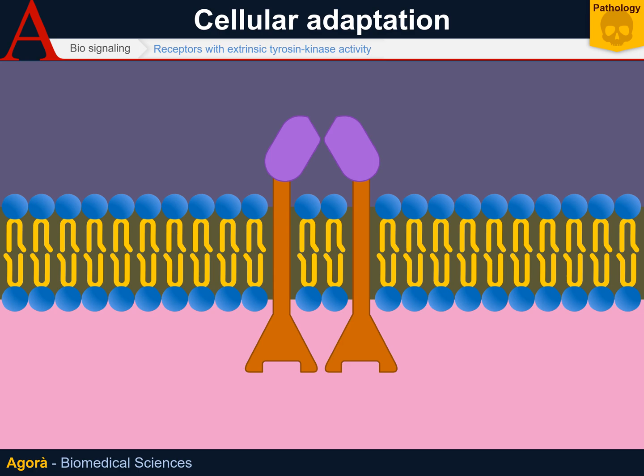Receptors of extrinsic tyrosine kinase activity differ from the previous receptors due to their inability to self-phosphorylate when binding the ligand. Instead, they go through a conformational change that will cause an external kinase to phosphorylate them. Since the tyrosine kinase activity is given by external kinases that wouldn't normally bind the receptor, the activity is not intrinsic but extrinsic. Among the most known extrinsic kinases, there is certainly JAK, which stands for Janus kinase. JAK phosphorylates the receptor, allowing its interaction with a transcription factor called STAT — signal transducers of activated transcription. The role of STAT is to activate itself after binding the phosphate and move into the nucleus, where it will stimulate the transcription of certain genes.